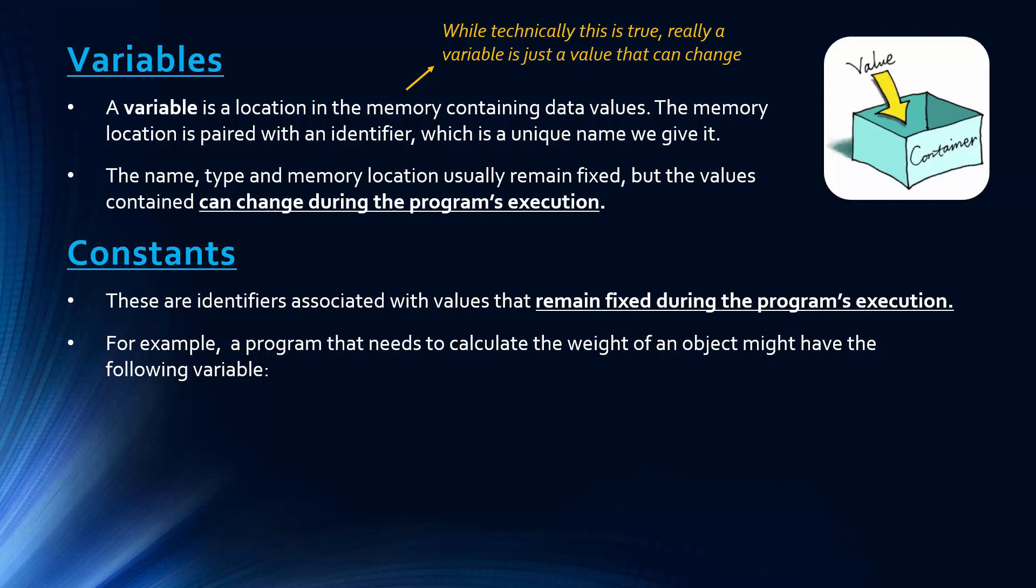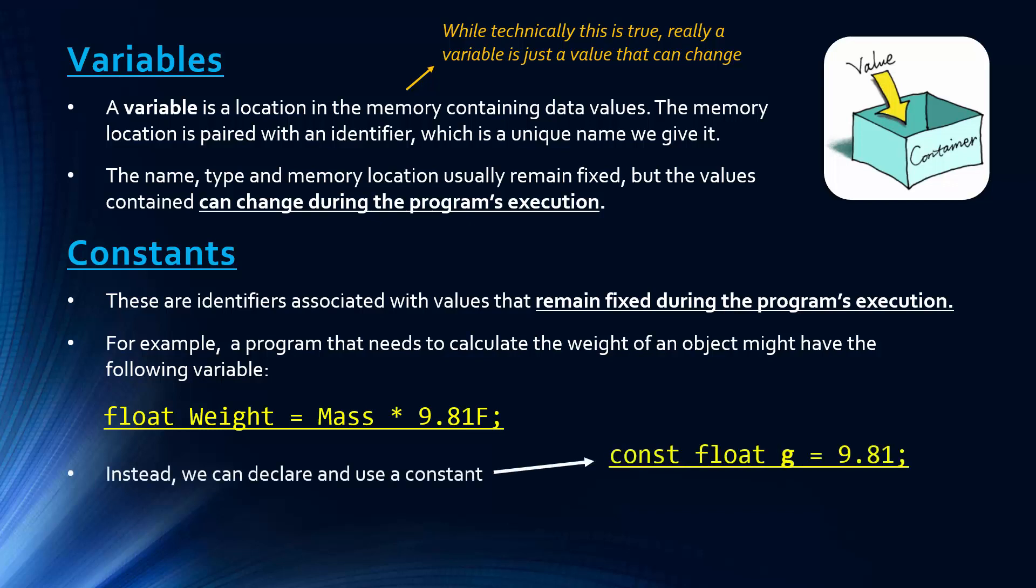A quick physics example - if you're going to calculate the weight of an object, you might have the following variable. This is in C sharp. We're declaring this variable as a float and assigning it to another variable, mass times 9.81. In physics, Newton's second law says weight is done by multiplying the mass times the acceleration. 9.81 is the acceleration due to gravity on Earth, which is constant. Instead of doing this, we could declare and use a constant called G and assign it to 9.81.